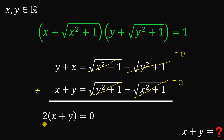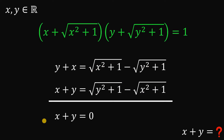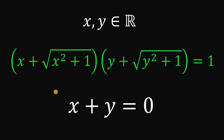We want to find the value of x plus y, so divide both sides by 2, and we get x plus y equals 0. This is the value we wanted to find. Given the equation, quantity x plus square root of x squared plus 1 multiplied by quantity y plus square root of y squared plus 1 equals 1, wherein x and y are both real numbers, the value of x plus y is 0. And as always, we are done.